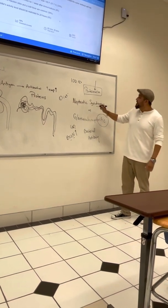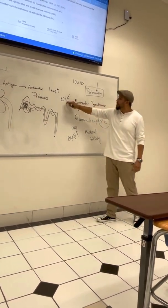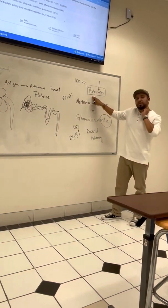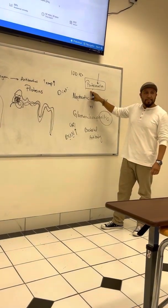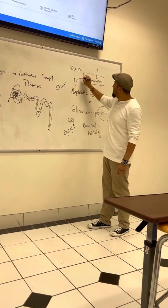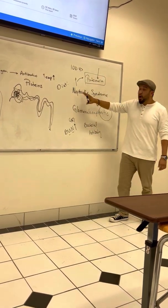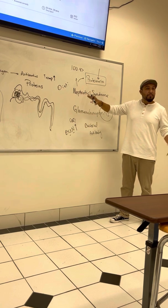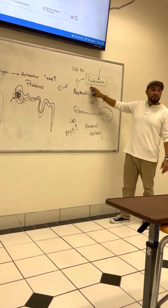And so, with nephrotic syndrome, in your diet, since you know that they're losing proteins, what do you do with the protein in the diet? Increase it. You increase it, right? So, for this patient, you want to increase proteins. Because all that's happening in nephrotic syndrome, or the main thing that's happening, is that they have proteinuria. They're losing the protein.